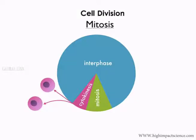Mitotic cell division is a part of the larger cell cycle, taking about 80 minutes. As we earlier said, the cell spends a larger part of its time in the interphase stage. For convenience, mitosis is divided into several stages.